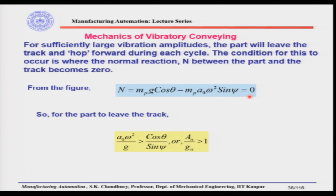When N equals zero, that is the limiting condition for the part to leave the track; the part will actually leave when the inertia component exceeds gravity. Rearranging, A0·omega²/g must be greater than cos(θ)/sin(ψ), or equivalently An/gn must be greater than 1. This is an important derivation: it says that when the dimensionless normal track acceleration An/gn exceeds 1, the part will leave the track. For sufficient conveying velocity, the normal track acceleration must be more than 1.